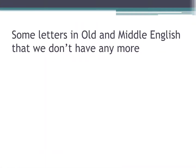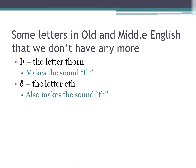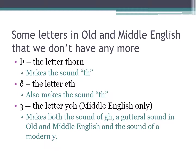Some letters in Old and Middle English that we don't have anymore include 'thorn,' which makes the 'th' sound as in 'the.' There is also another letter that also makes the 'th' sound, called 'eth,' and these could be used interchangeably. There was no standard spelling until really the 1800s for English. There is also the letter 'yogh,' which makes both the sound you might see at the end of a word like 'laugh' and also the sound of a modern 'y.' These things existed in the language until we get to Shakespeare's time.